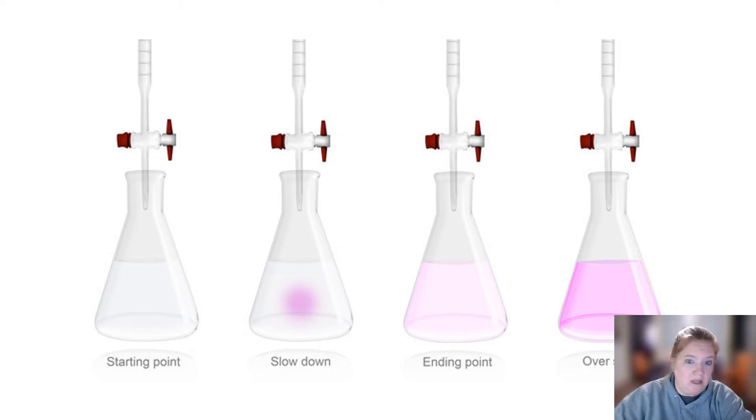Starting point, they're both clear. I slow down. When I start seeing bursts of pink that disappear as I swirl it, my ending point is the faint. Overshoot, the indicator is very bright.